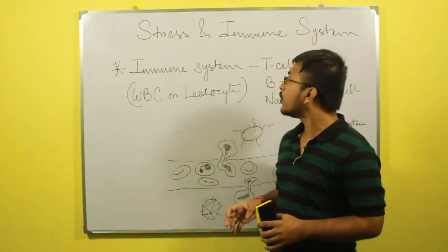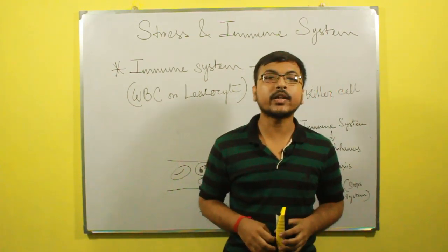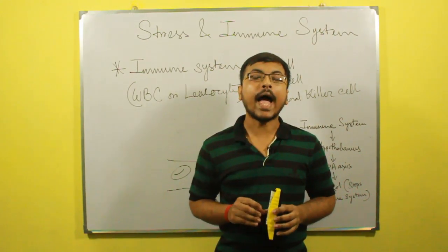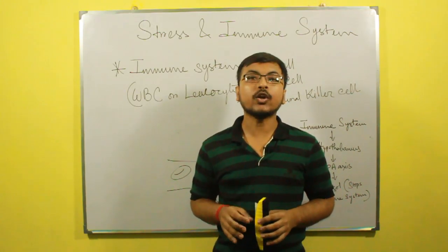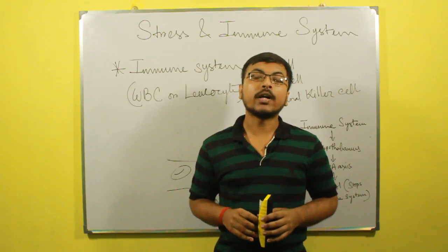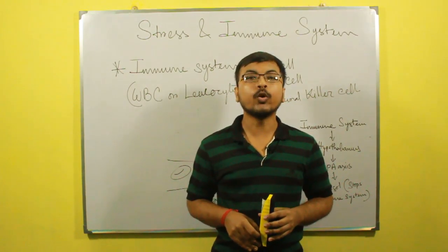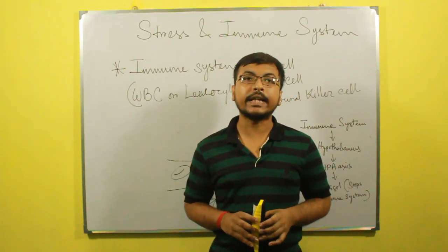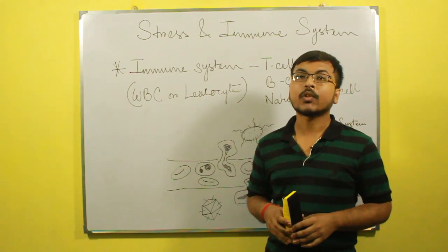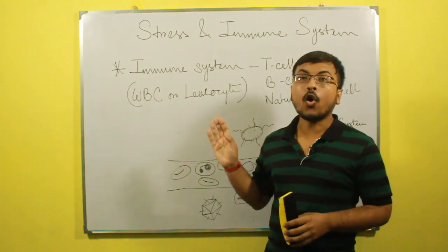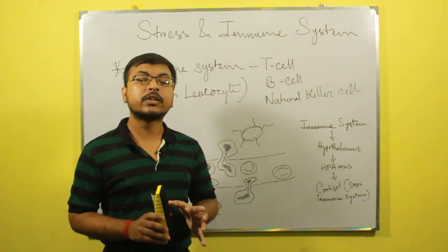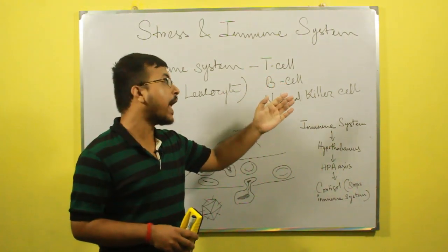Now we will discuss stress and the immune system. The immune system is a collection of billions of cells that travel through our blood stream and move in and out of tissue and organs, defeating bacteria and viruses. These cells are produced mostly from the spleen, lymph nodes, thymus, and bone marrow. The study of psychological factors in the immune system is known as psychoneuroimmunology. In our blood stream, white blood cells — also called leukocytes — are present. Leukocytes have three distinct types: T cells, B cells, and natural killer cells.